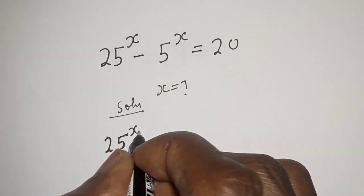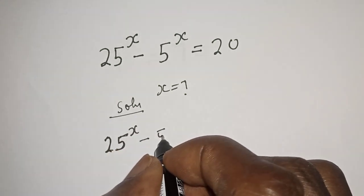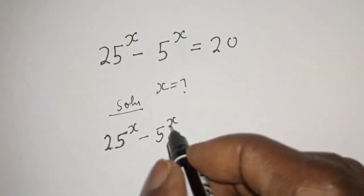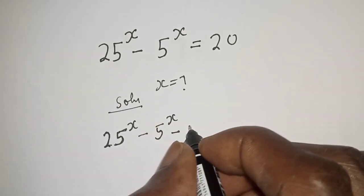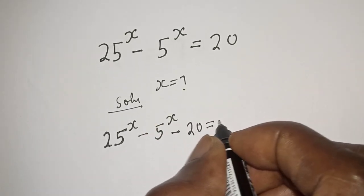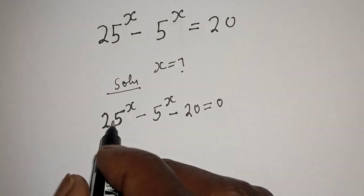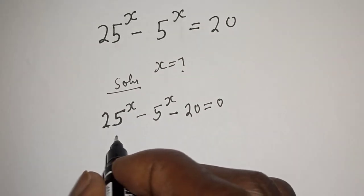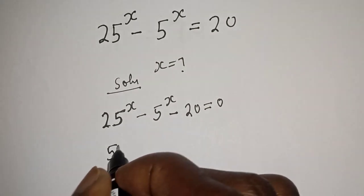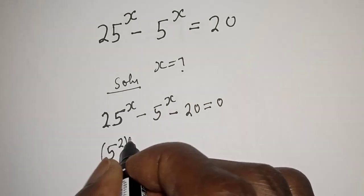If we bring the 20 to this side, we get minus 20 equal to zero. Then 25 raised to power s can be written as 5 squared raised to power s.